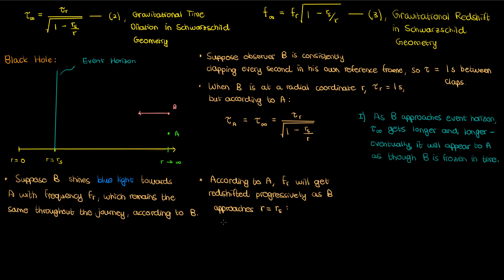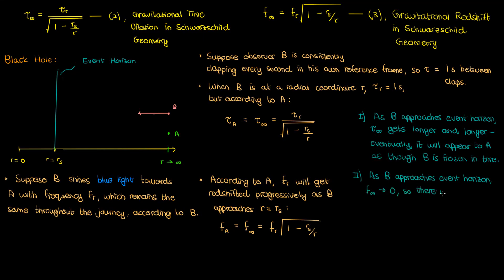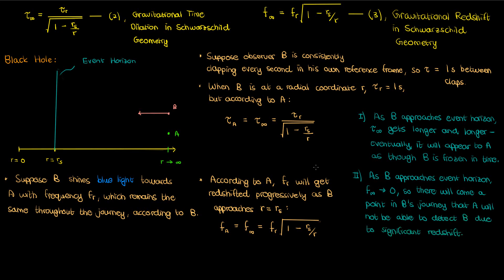The equation governing this redshift is equation 3, which we've already discussed. You can see from this equation that as observer B gets closer to the event horizon, the frequency of the light that B shines approaches zero according to observer A, so there will come a point in B's journey that A will no longer be able to detect B because the electromagnetic waves coming from B are so redshifted that they're just no longer detectable. This was our second conclusion.